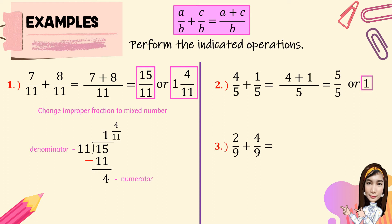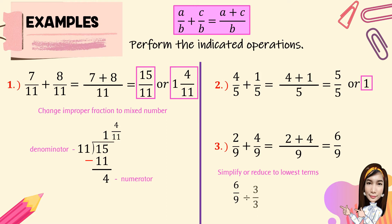For number 3, we have 2 over 9 plus 4 over 9. First, we're going to add the numerators, then copy the common denominator, 9. So 2 plus 4 is equal to 6 over 9. We're going to simplify or reduce to lowest terms. 6 over 9 have a common factor, and the greatest common factor is 3. So we divide both numerator and denominator by 3: 6 divided by 3 is 2, and 9 divided by 3 is 3. So the lowest term is 2 over 3.